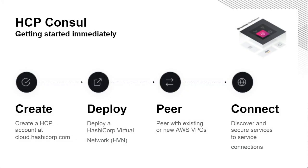Generally, the way we look at how you get started with HCP Consul is a four-step process. I've already done the deploy piece and I've already peered. We're going to focus on Connect, but really the idea is that when you log into the platform, you create an HCP account, deploy your virtual network, deploy a Consul cluster, peer it with your existing AWS VPCs, and go ahead and connect it. If you're curious where to get started, you're just going to create, deploy, peer, and connect.